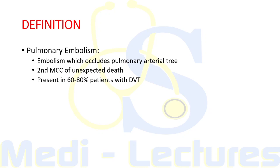Starting with the definition: pulmonary embolism is defined as embolism which occludes the pulmonary arterial tree — that is the pulmonary artery or its branches. It is considered the second most common cause of unexpected death after coronary artery disease, and is present in 60 to 80 percent of patients with deep vein thrombosis. Of these patients, more than 50 percent are asymptomatic.